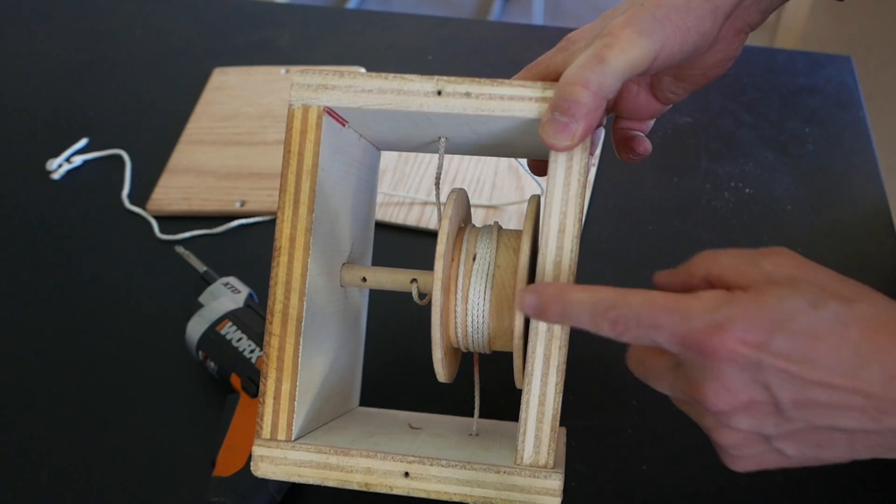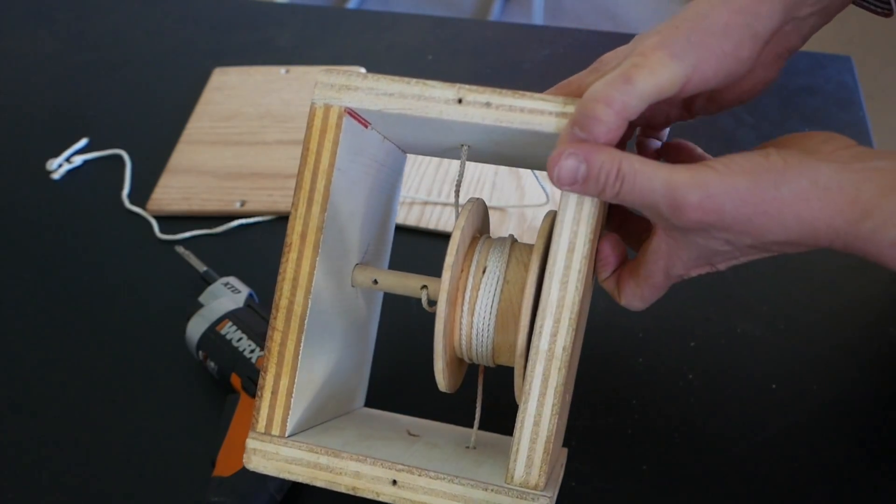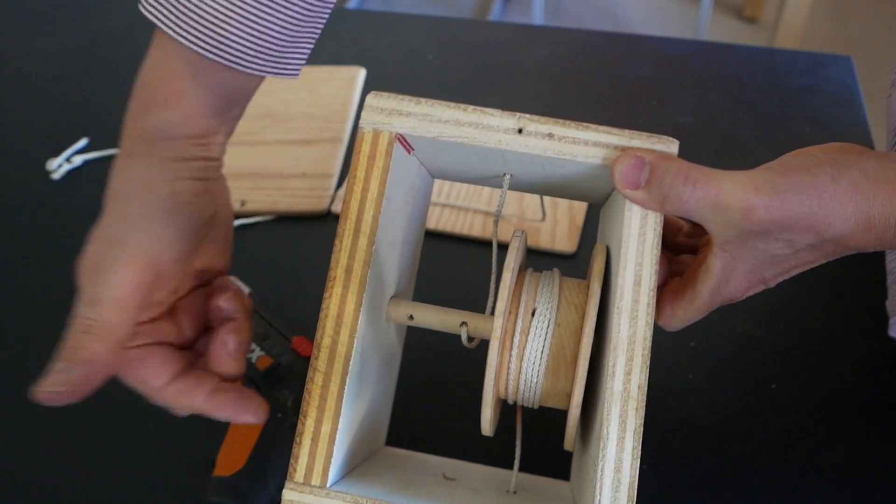The string applies the effort force on the big wheel, and it's wrapped in this direction, and the string on the axle is wrapped in this direction.